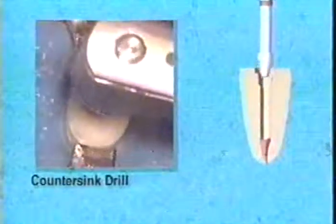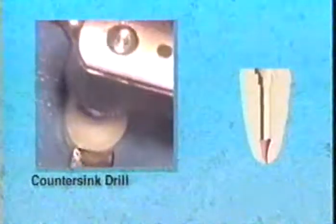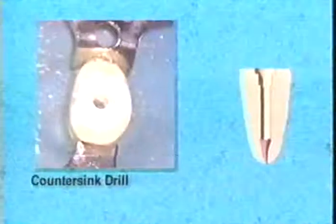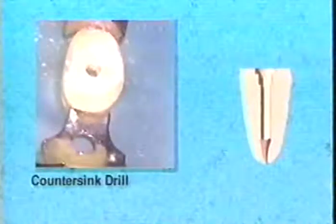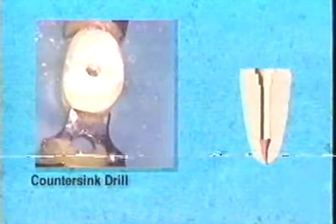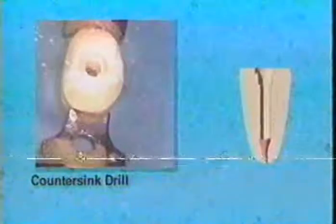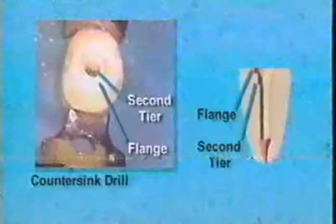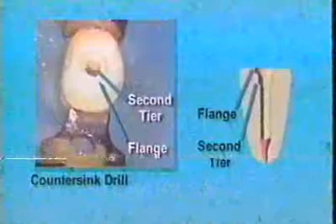Within moments, you will have machined the perfect seat for the Access Post Overdenture. It is important to note that the countersink root facer is not self-limiting and can be used to further deepen the dual preparations if needed to provide more clearance for the overdenture post and cap. Please observe the well-defined countersink and root-faced preparations. The Access Post Overdenture is now trial seated. If the flange of the post is not fully seated within its preparation, the post must be cut.